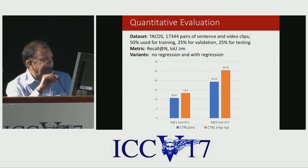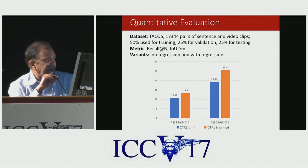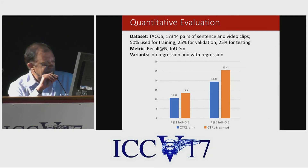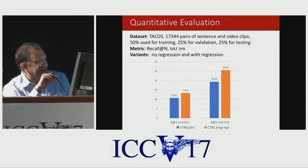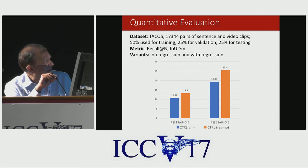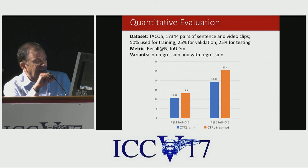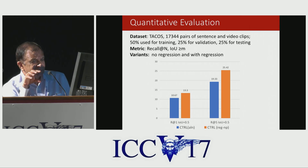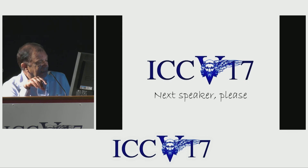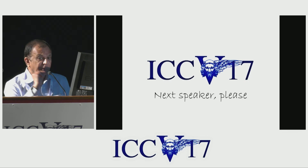For quantitative evaluation on the TACOS dataset, we use recall at different ranks — shown here at rank one and rank five — and vary the IOU with the ground truth, showing IOU of 0.5 here with more results at the poster. Results show regression helps significantly. There's no real baseline to compare against, as we believe this is a new task, but we created our own baselines which you can see at the poster. Thank you for your attention.